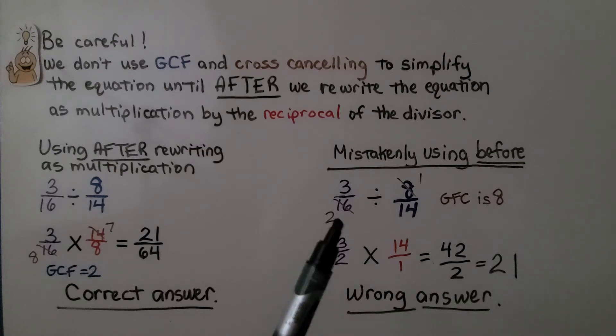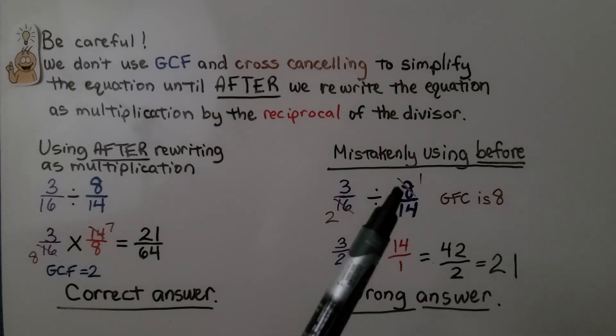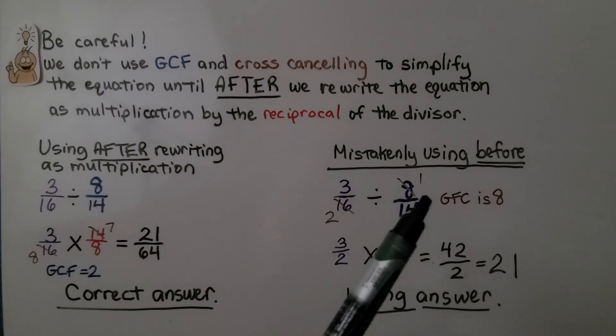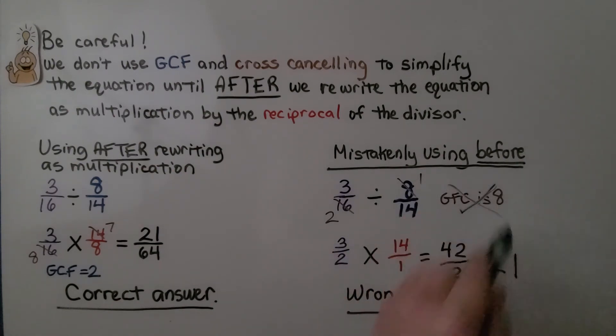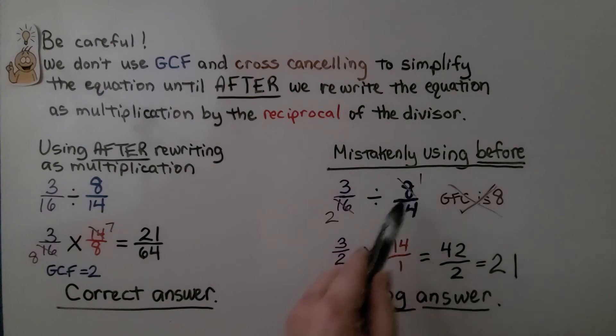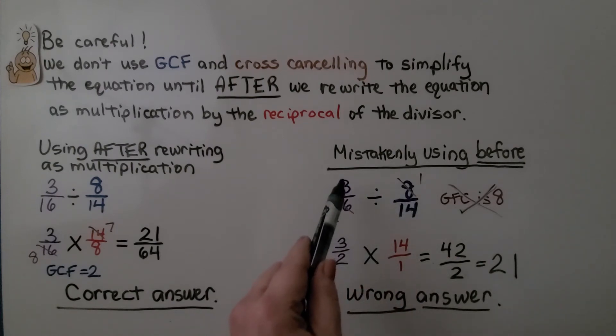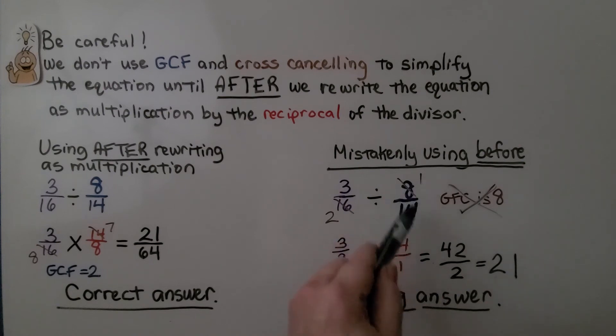If we mistakenly try using the greatest common factor before we do this, we're going to see an 8 and a 16 and think that they have 8 in common as a GCF, and they don't. That's wrong. And we'll think there's 1 8 here and 2 8s here, so we have 3 halves and 1 14th that would flip around to reciprocal as 14 over 1.